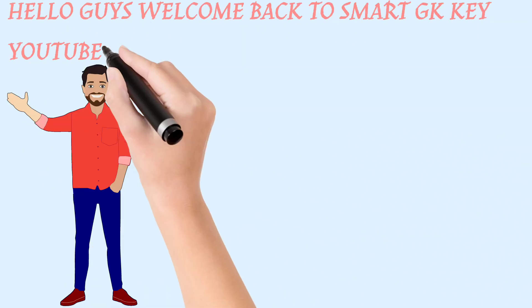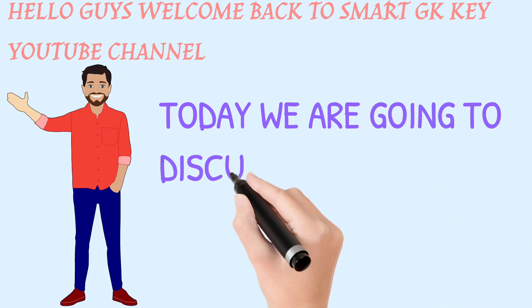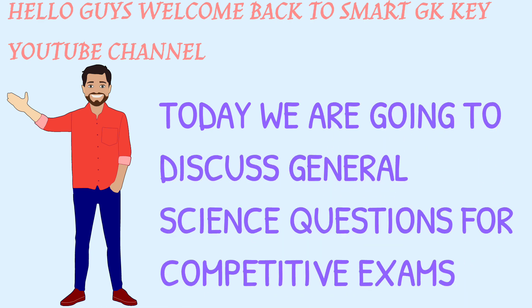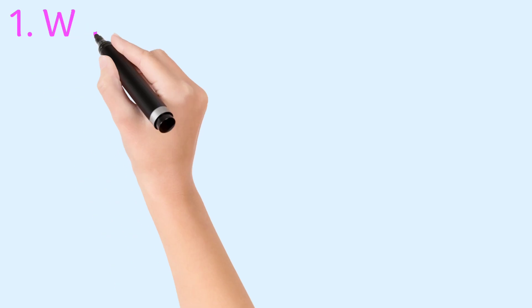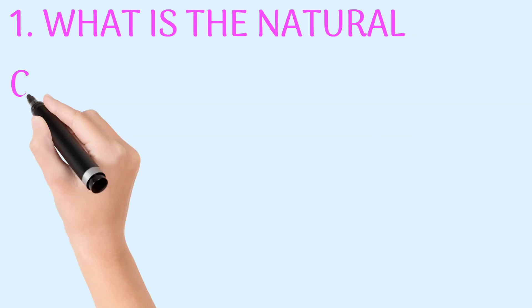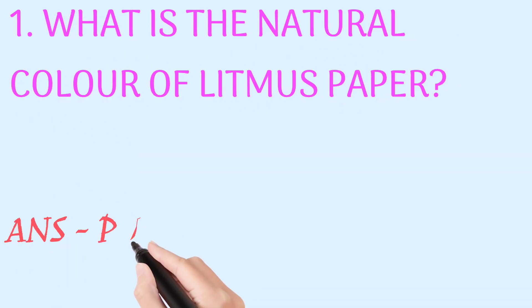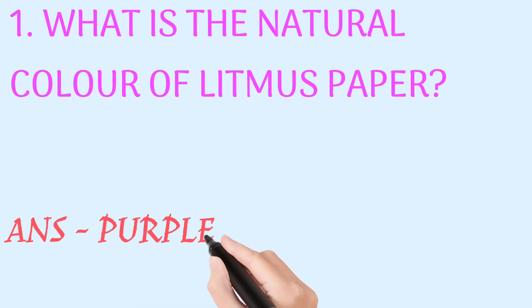Hello guys, welcome back to Smart GKK YouTube channel. Today we are going to discuss general science questions for competitive exams. What is the natural color of litmus paper? Answer: purple.